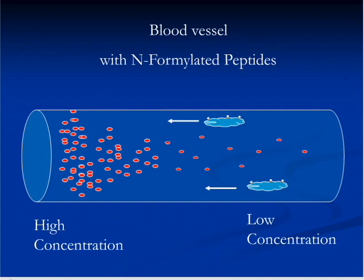This slide shows the direction of movement of white blood cells called neutrophils towards the highest concentration of proteins produced by bacteria. Once they reach the site of infection, which in our example is the alveoli of the lung, they leave the blood vessels and start the process of engulfing and killing the bacteria.